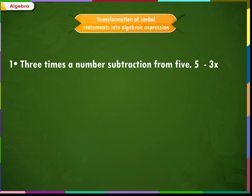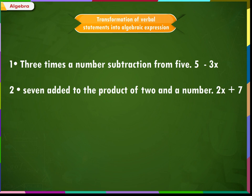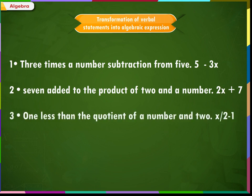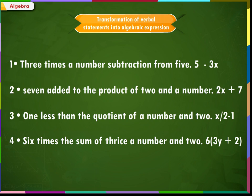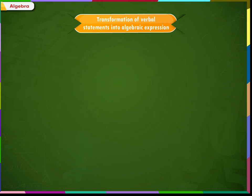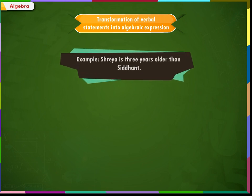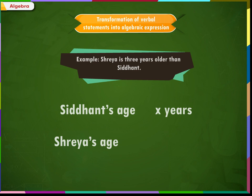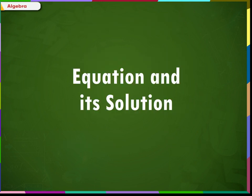Example 1: 3 times a number subtracted from 5 gives 5 minus 3x. Example 2: 7 added to the product of 2 and a number gives 2x plus 7. Example 3: 1 less than the quotient of a number and 2. For comparison: Shreya is 3 years older than Siddhant. If Siddhant's age is x years, then Shreya's age will be x plus 3.